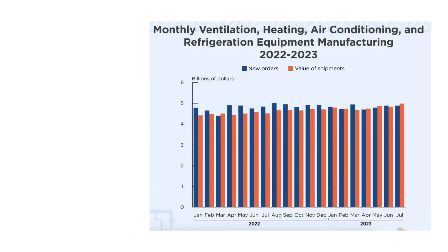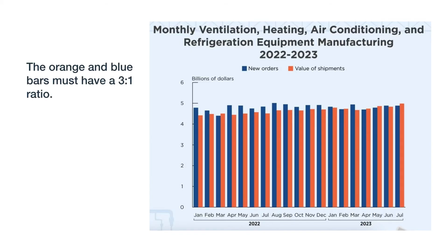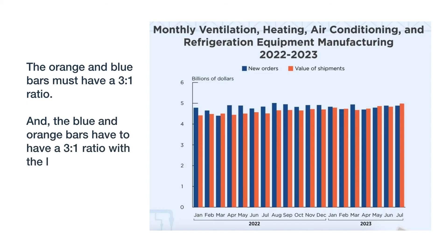This bar graph from census.gov has orange and blue bars right next to each other, with a light blue background behind the bars. Since all these colors are touching or next to each other, the orange and blue bars must have a 3 to 1 ratio, and the blue and orange bars have to have a 3 to 1 ratio with the light blue background.